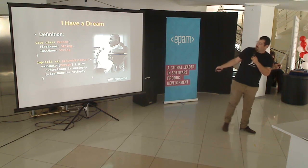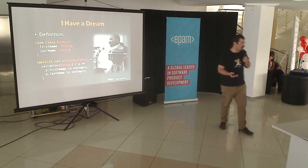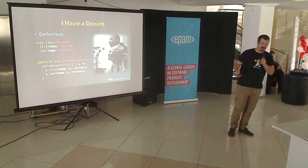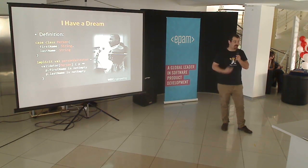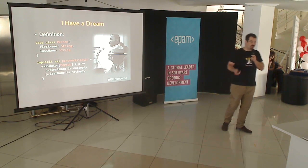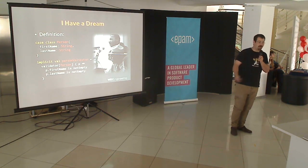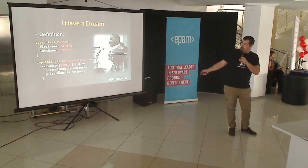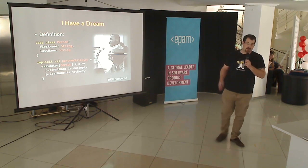So in this case, I have here an implicit value person validator. Validation is a type class in Accord. I define a validator over the type of person, and the way I actually define validation rules is I give a name to a sample object — let's call it P for person — and then I can write P.firstName is not empty, P.lastName is not empty. And that is the premise that we started off with.